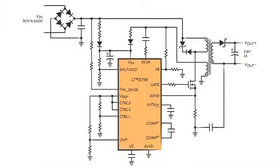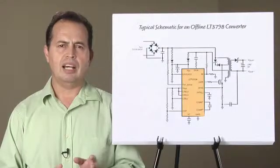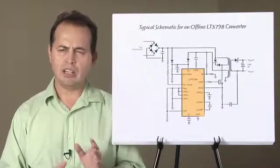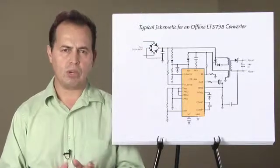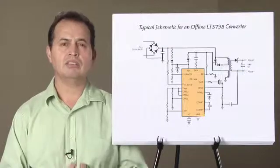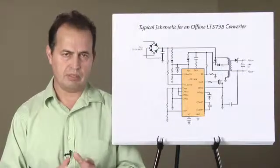The LT3798 requires no optocoupler. To regulate the output, it samples the auxiliary winding voltage on the primary side with a resistor divider and compares it to a fixed reference. The feedback includes an internal current source that helps compensate for output diode drops and needs to be accounted for when selecting the resistor divider.